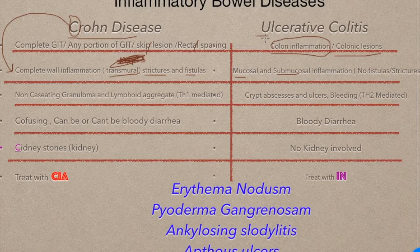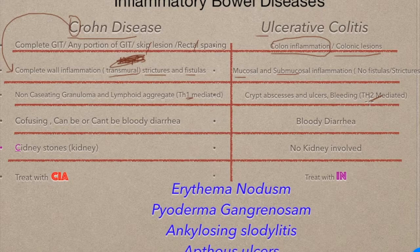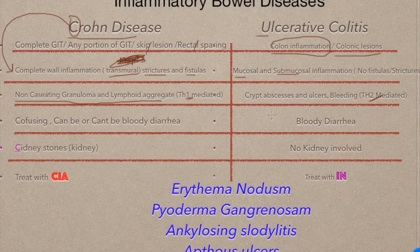Crohn's disease: 'C' comes before 'U', and 1 comes before 2, so it's T helper 1 mediated. Ulcerative colitis: 'U' comes after 'C', and 2 comes after 1, so it's T helper 2 mediated. Crohn's also has non-caseating granulomas and lymphoid aggregates, while ulcerative colitis has crypt abscesses and ulcers with bleeding.